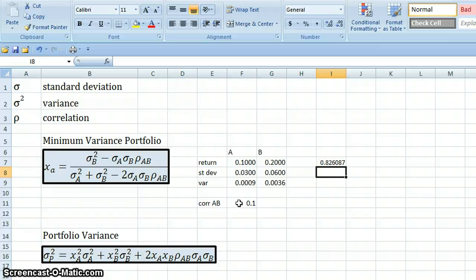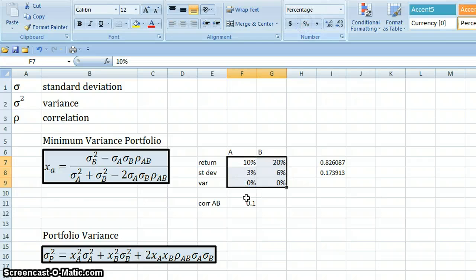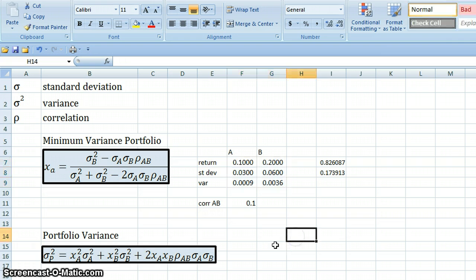That gives us an answer 0.826 or about 83 percent. That means the minimum variance portfolio consists of about 83 percent of stock A, and if we do one minus that, about 17 percent of stock B. Notice these are all in decimal form. You could do this entire thing in percentage form. Notice the answers didn't change over here, so that is just your preference as to how you want to do that, or might depend on the way the information is given to you.